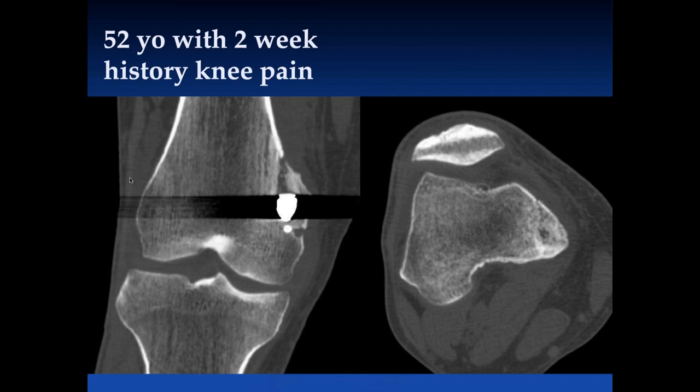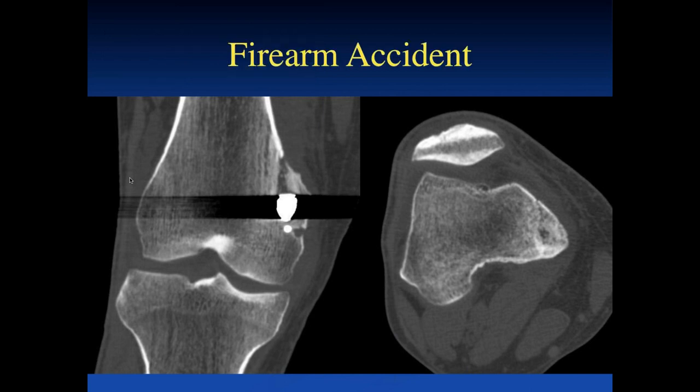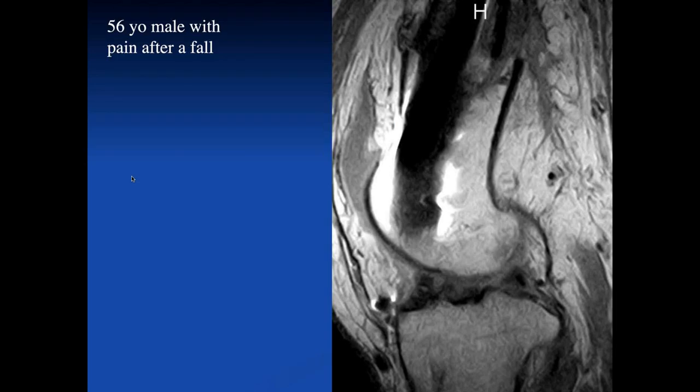There's a 52-year-old with a two-week history of knee pain. It looks like there's a fracture extending through the posterior medial femoral condyle, and there's what looks like a bullet fragment. He was trying to play quick draw and pulled the trigger before he pulled out the gun — that's what happened.